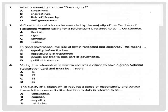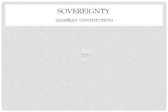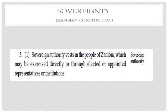Let's dig in and see what sovereignty is, and also look at what direct rule, indirect rule, rule of monarchy, and self-governance are. According to the Zambia Constitution, being sovereign is an authority — the sovereign state is authority in the people of Zambia, which may be exercised directly or through elected or appointed representatives or institutions.